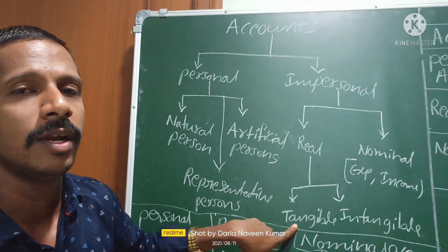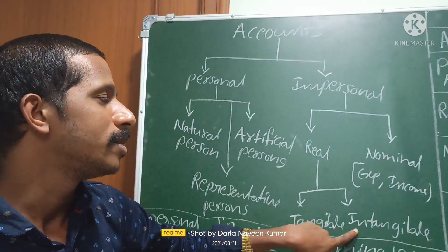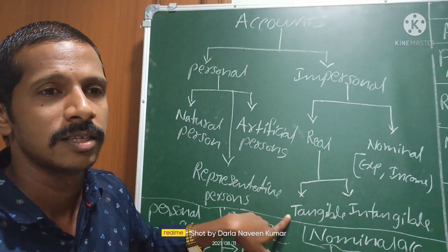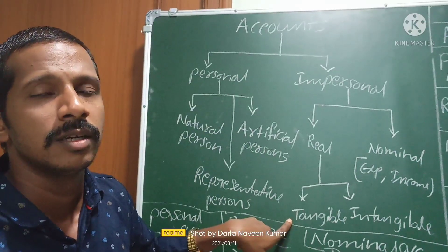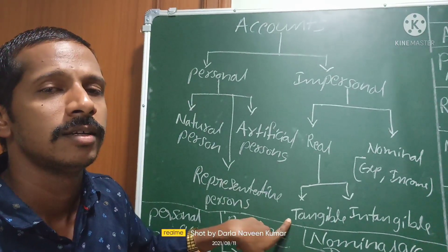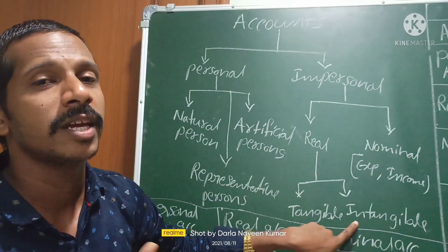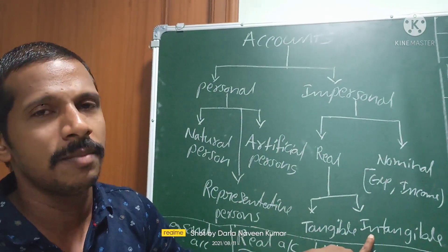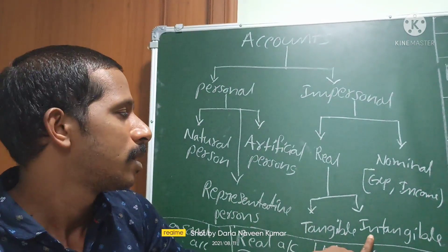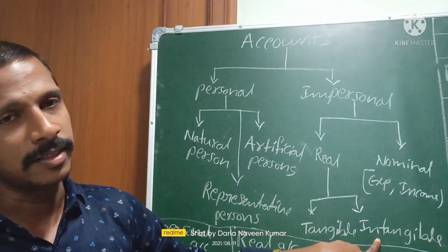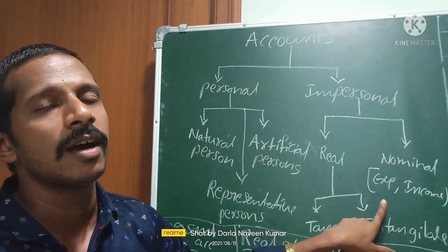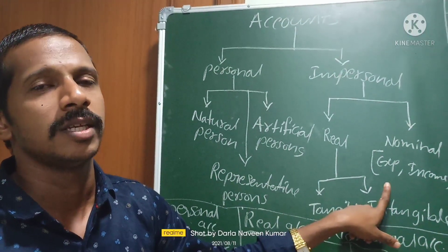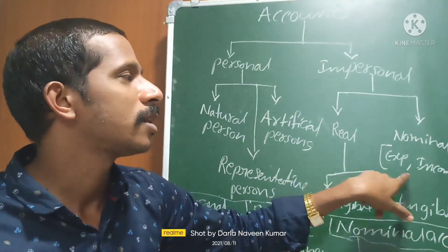Tangible assets means which we can touch, which we can feel, which we can see — assets like furniture, buildings, land, cash, stock, machinery are tangible. Intangible means which we cannot see, cannot touch, cannot feel — like goodwill, the good name of the company. You can't see it, but it represents the reputation of the company.